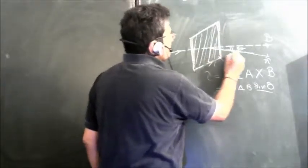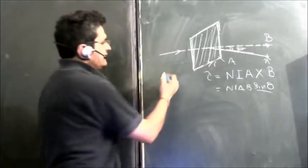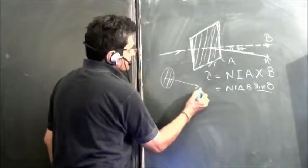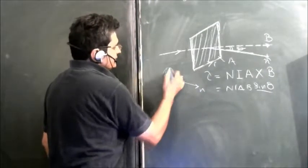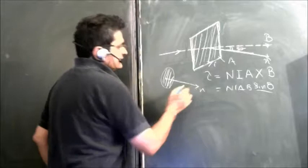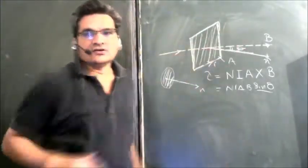So you have to see the angle between the perpendicular to the area and the magnetic field, not the plane. That was just the basic concept.